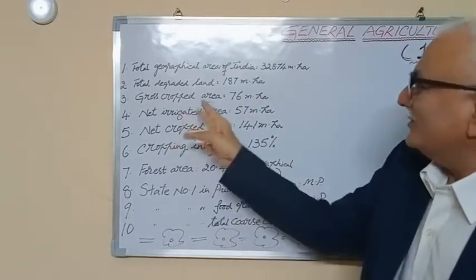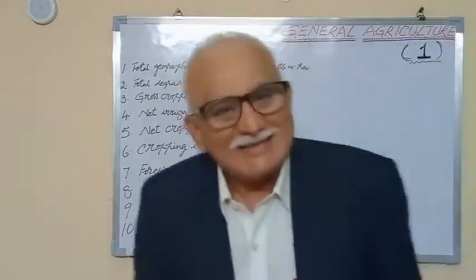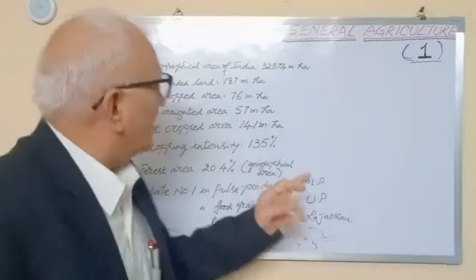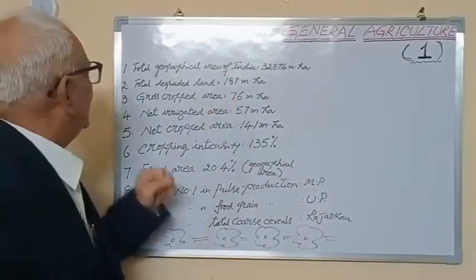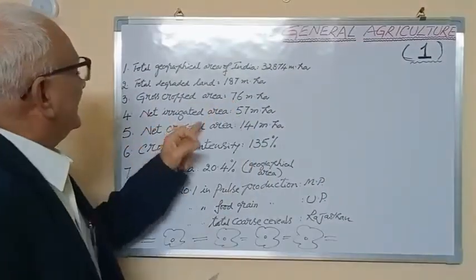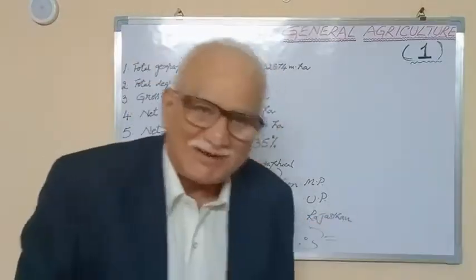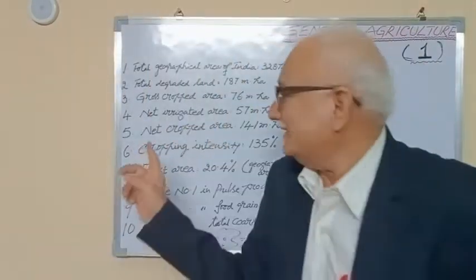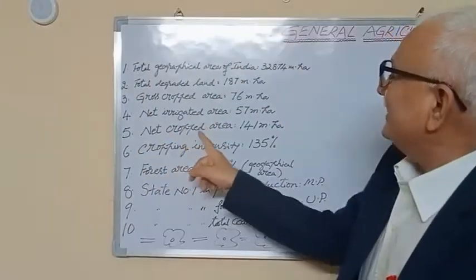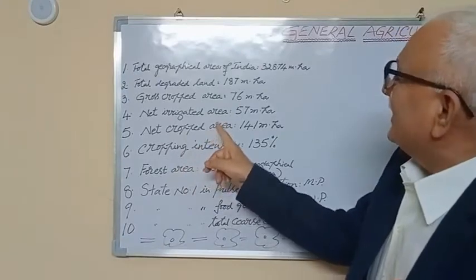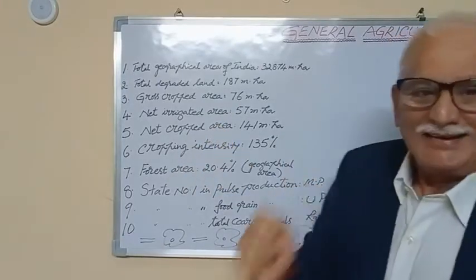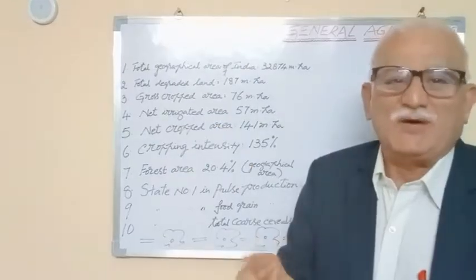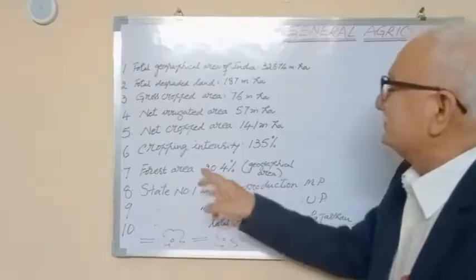Gross cropped area is 76 million hectares. Net irrigated area is 57 million hectares. Net cropped area is 141 million hectares.